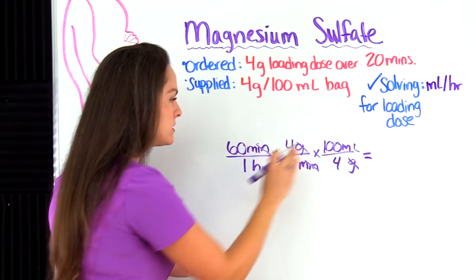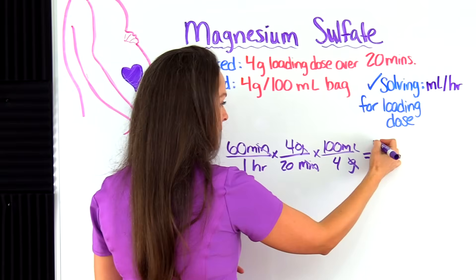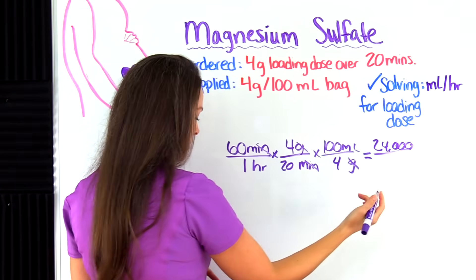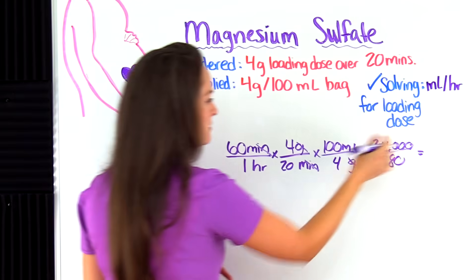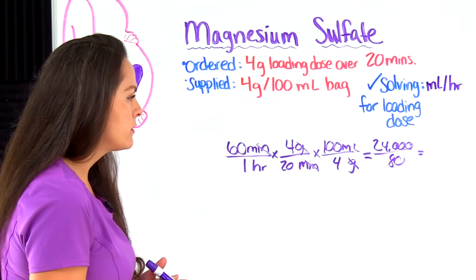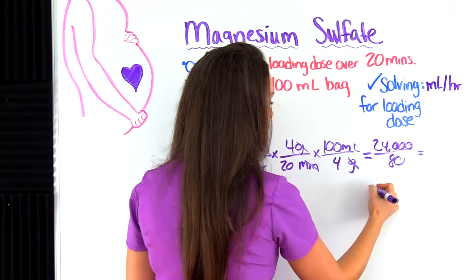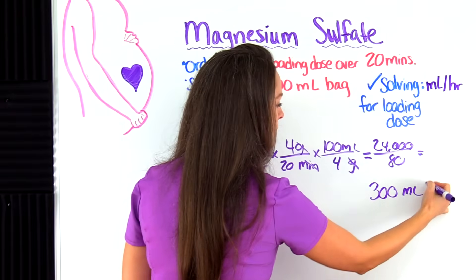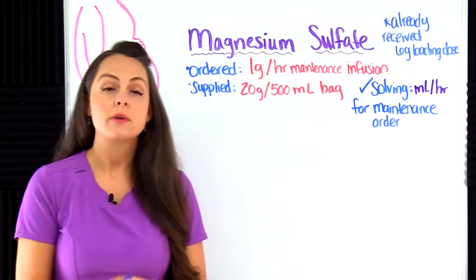Now we have milliliters on top and hours on the bottom, so we're ready to solve. We multiply everything on top and everything on the bottom. On top we get 24,000; on the bottom we get 80. Then we divide: 24,000 divided by 80 gives us 300. So our answer is 300 milliliters per hour.